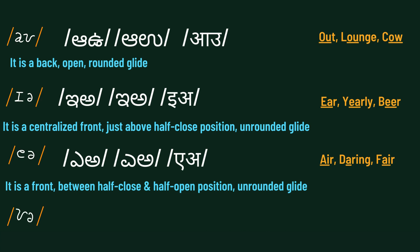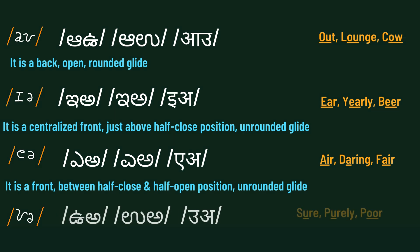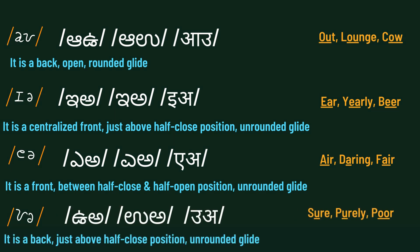Lastly, we have the sound /ʊə/. It is a back, just above half-close position and rounded glide. Examples are: sure, purely, poor.